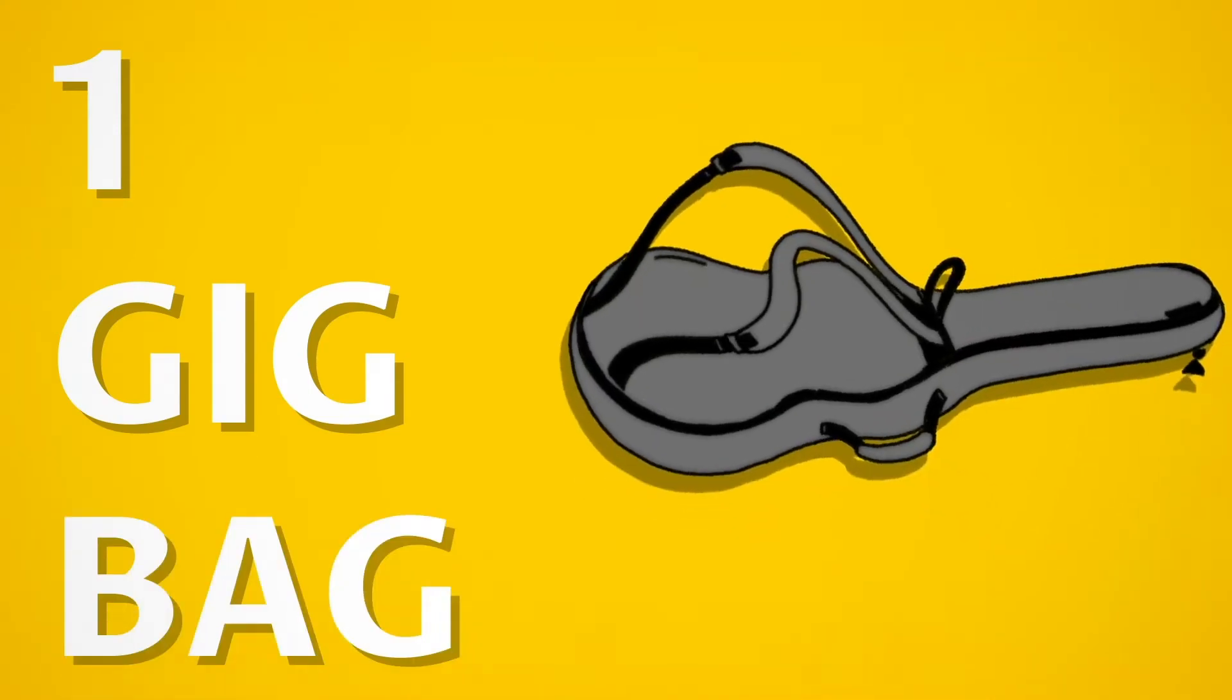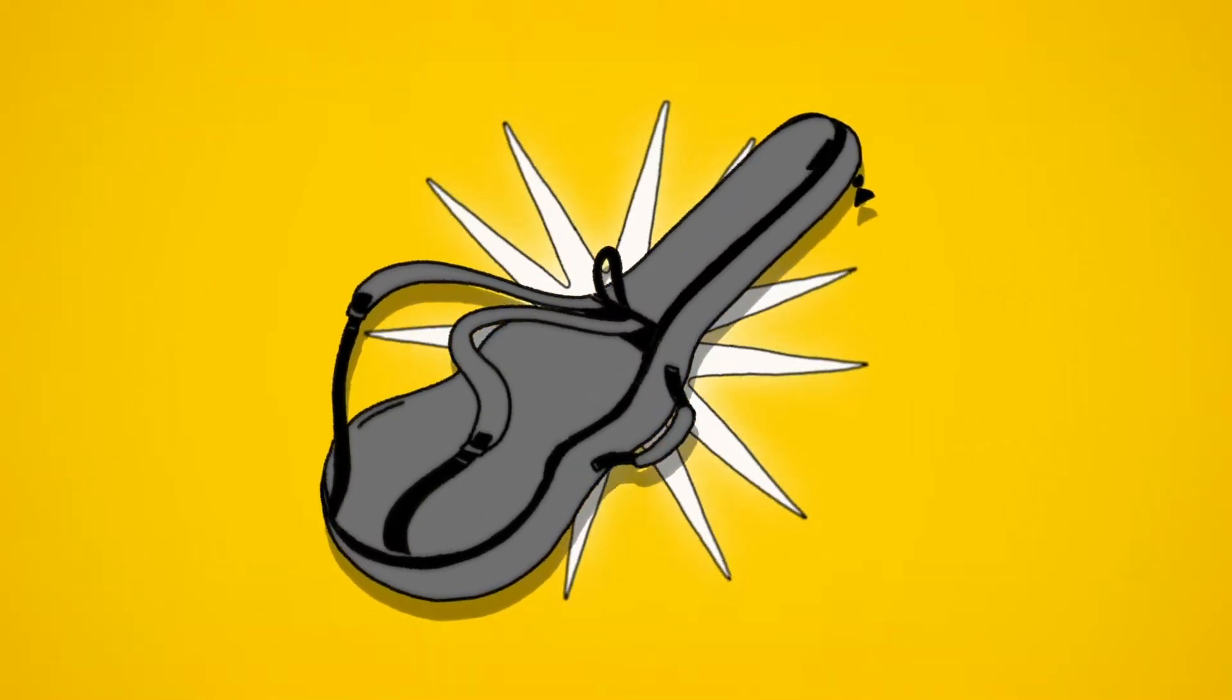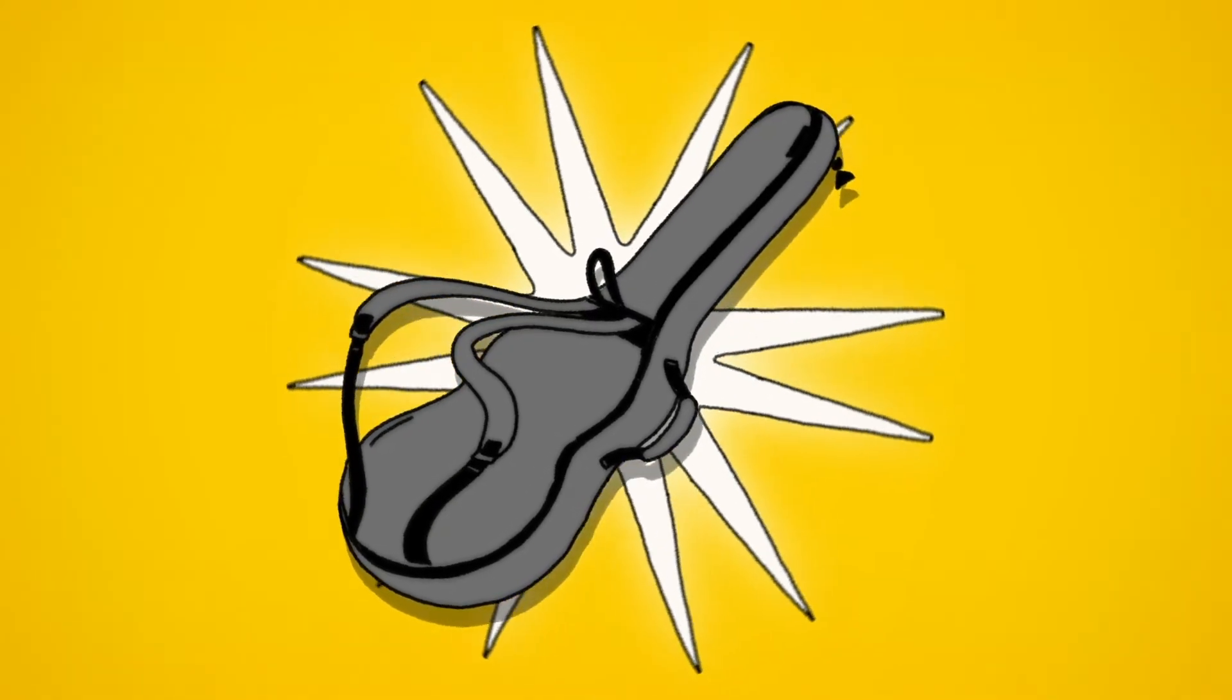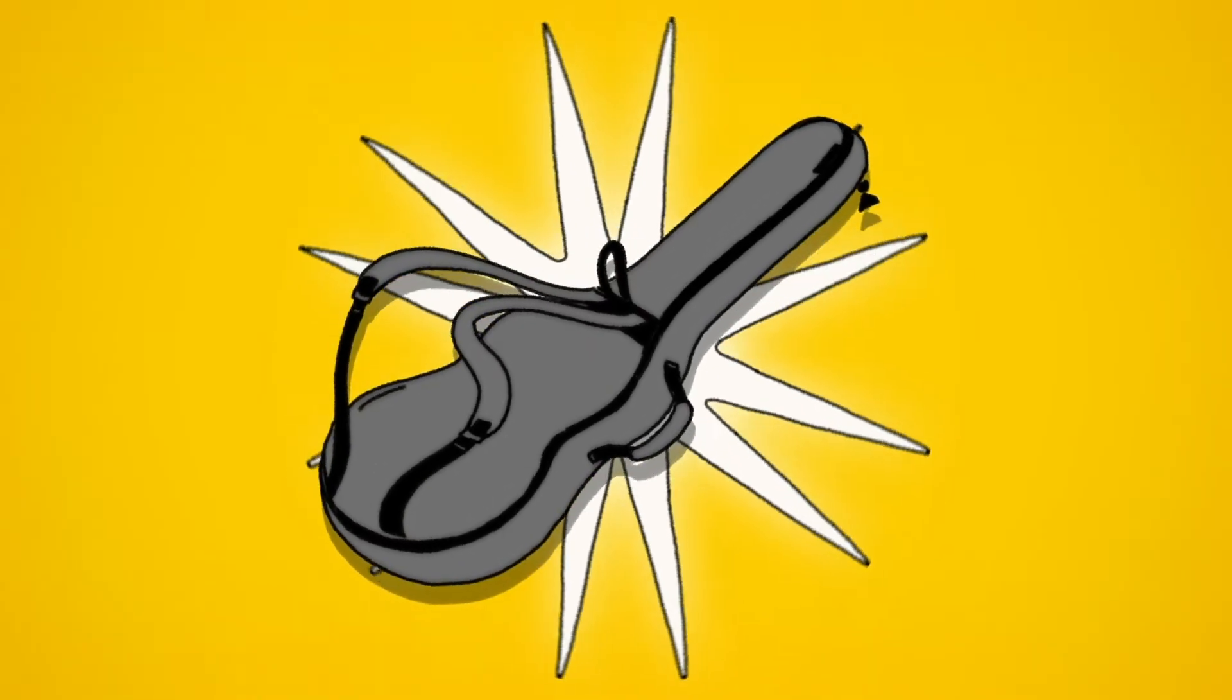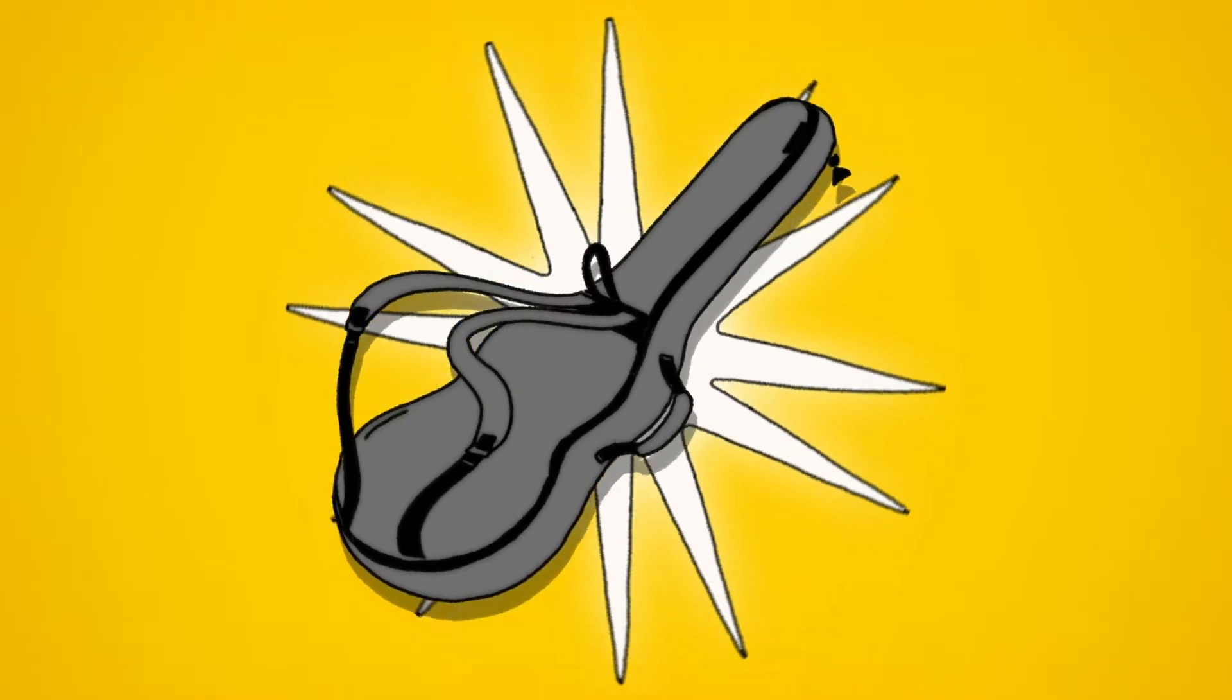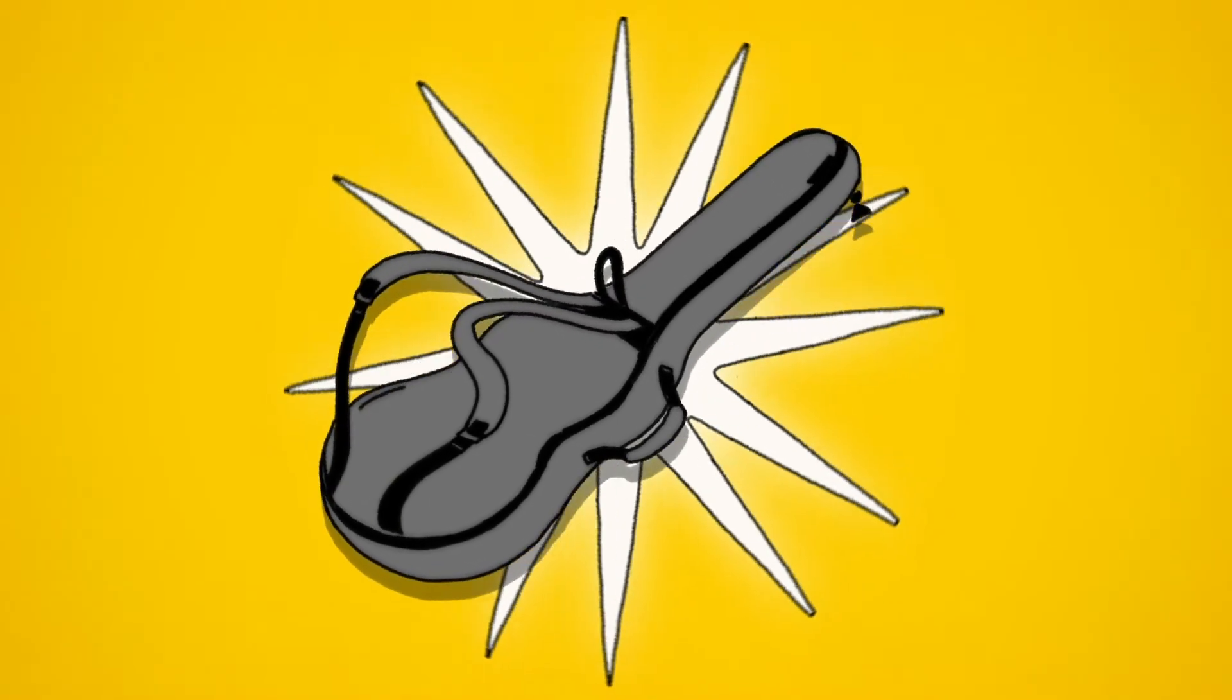Number 1: Gig bag. A gig bag is a great alternative to a hard guitar case. A good gig bag will not only keep your guitar well protected from bumps, scratches, and the weather, but it will also make your instrument much easier to transport, usually allowing you to wear the case like a rucksack. This makes it an ideal choice for walking to school or to your next band rehearsal.